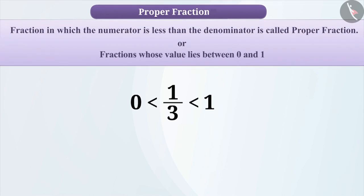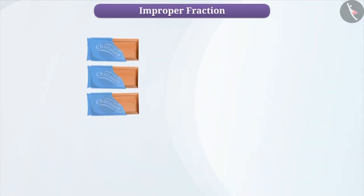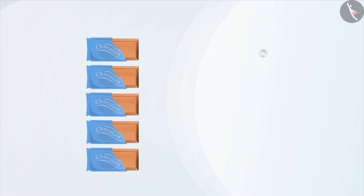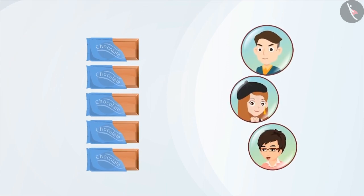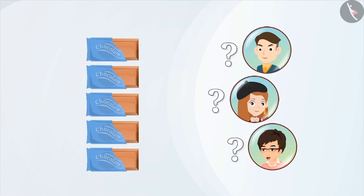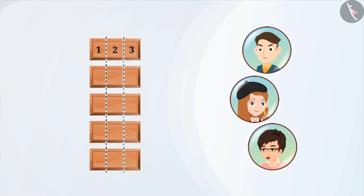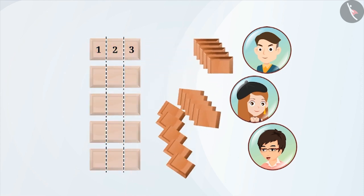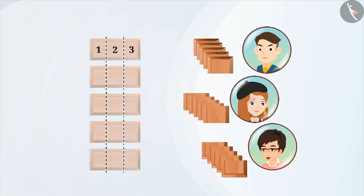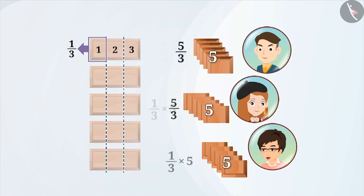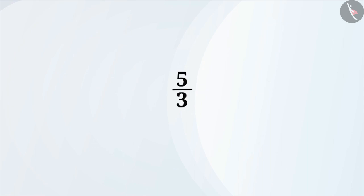Fraction whose value lies between 0 and 1 is called a proper fraction. Let's assume that you have five chocolates and you have to divide them equally among three people. Then how many pieces will each person get? We have to divide each chocolate into three equal parts and give a part of each chocolate to each person. By doing this, each person will have five parts of 1 by 3 chocolate. Therefore, each person will get 5 by 3 chocolate. In this fraction, 5 is the numerator and 3 is the denominator.